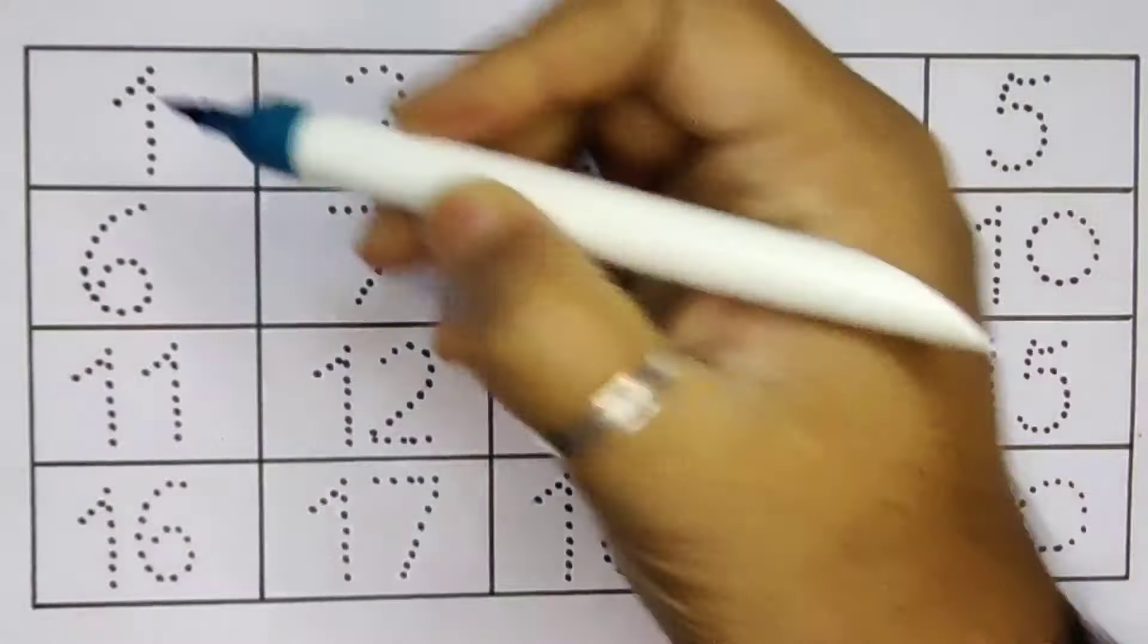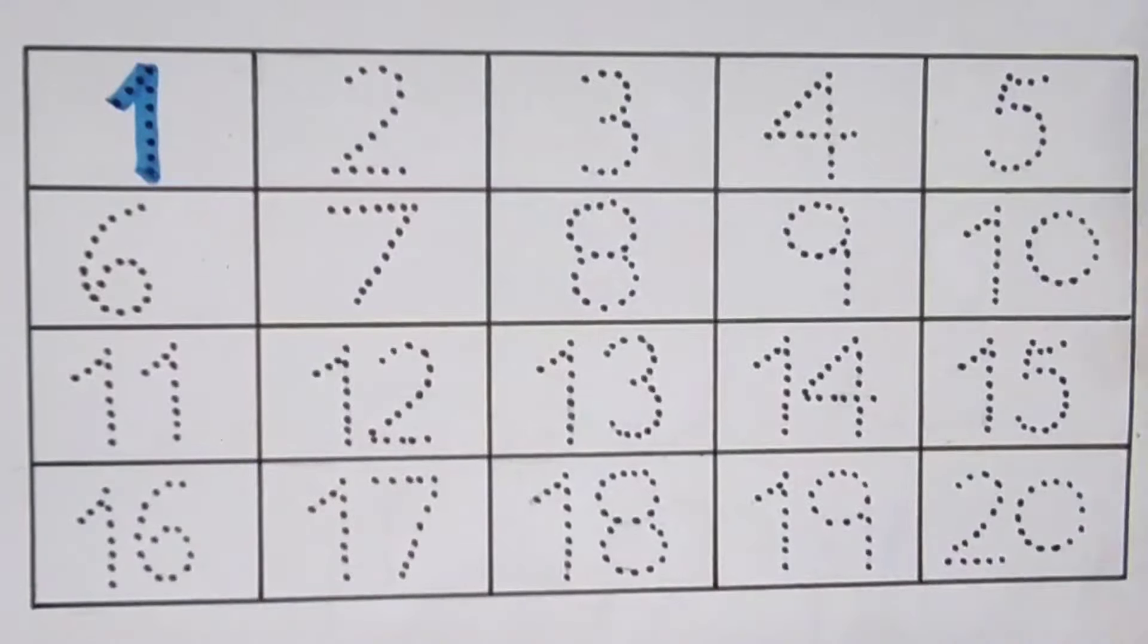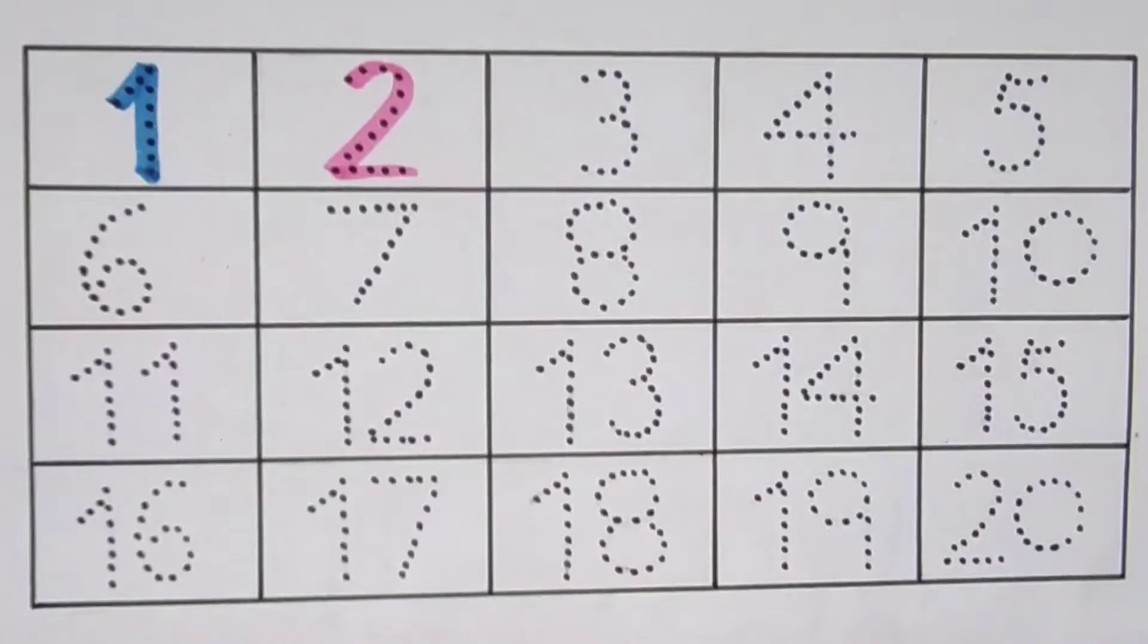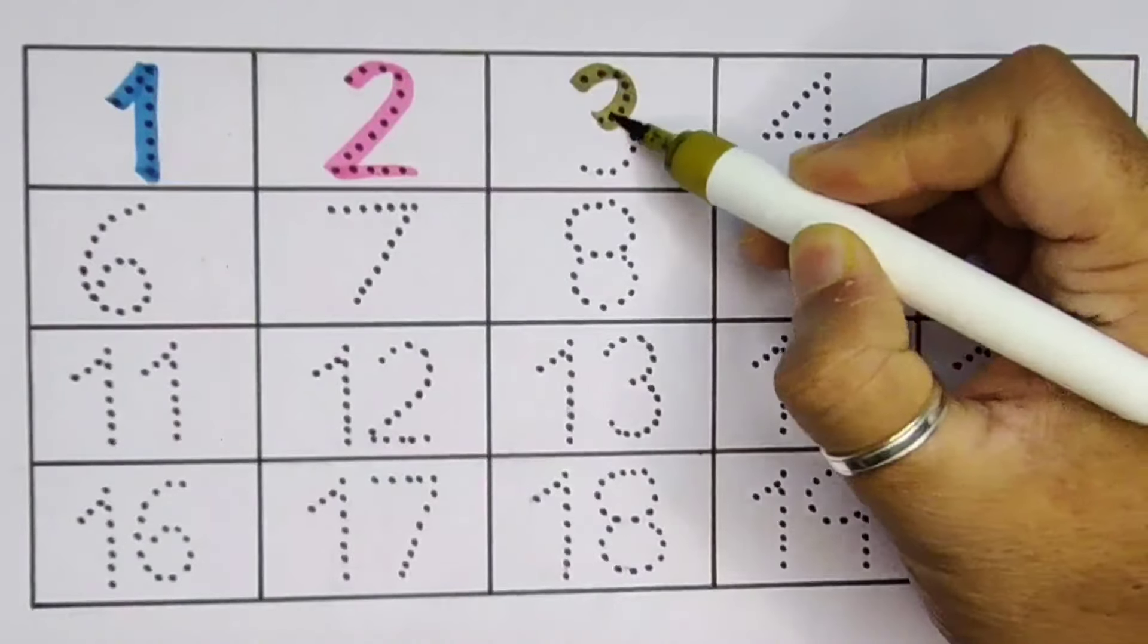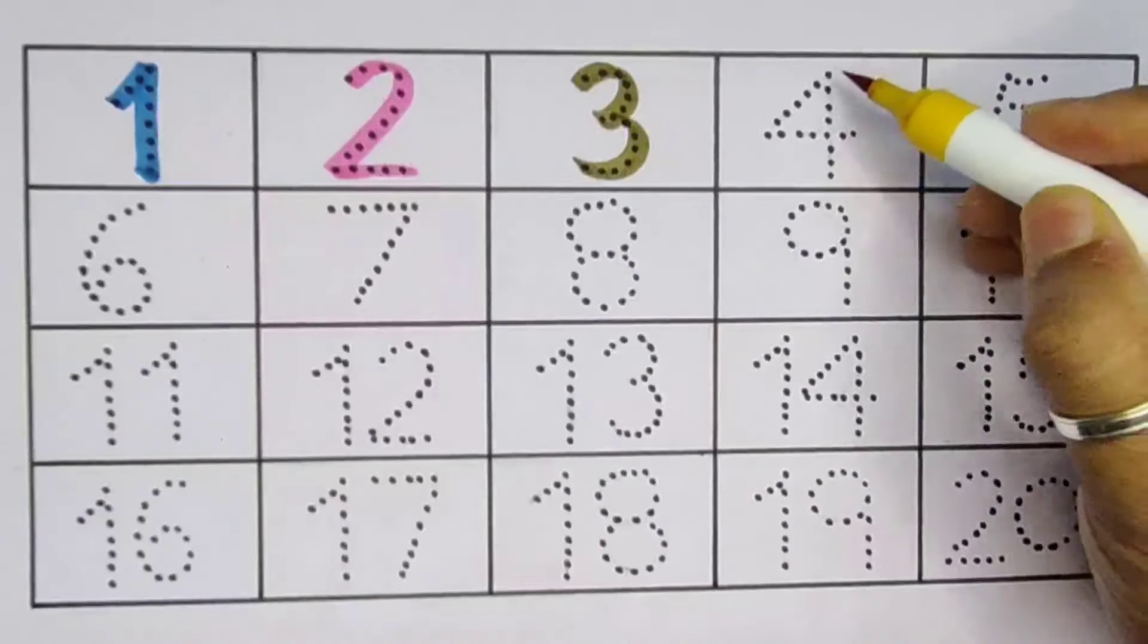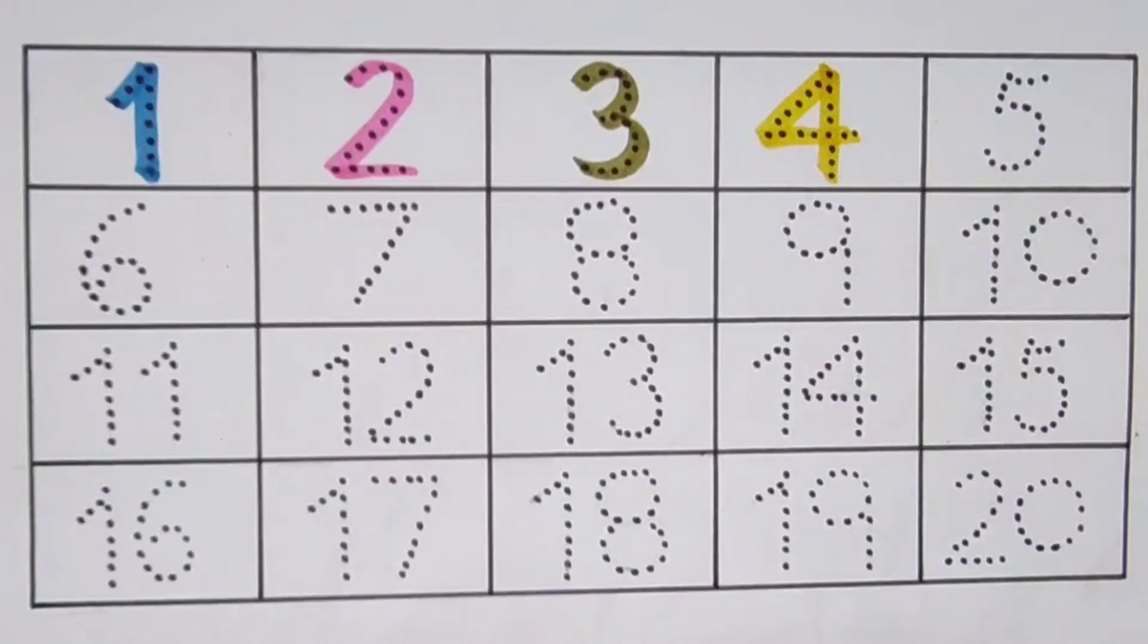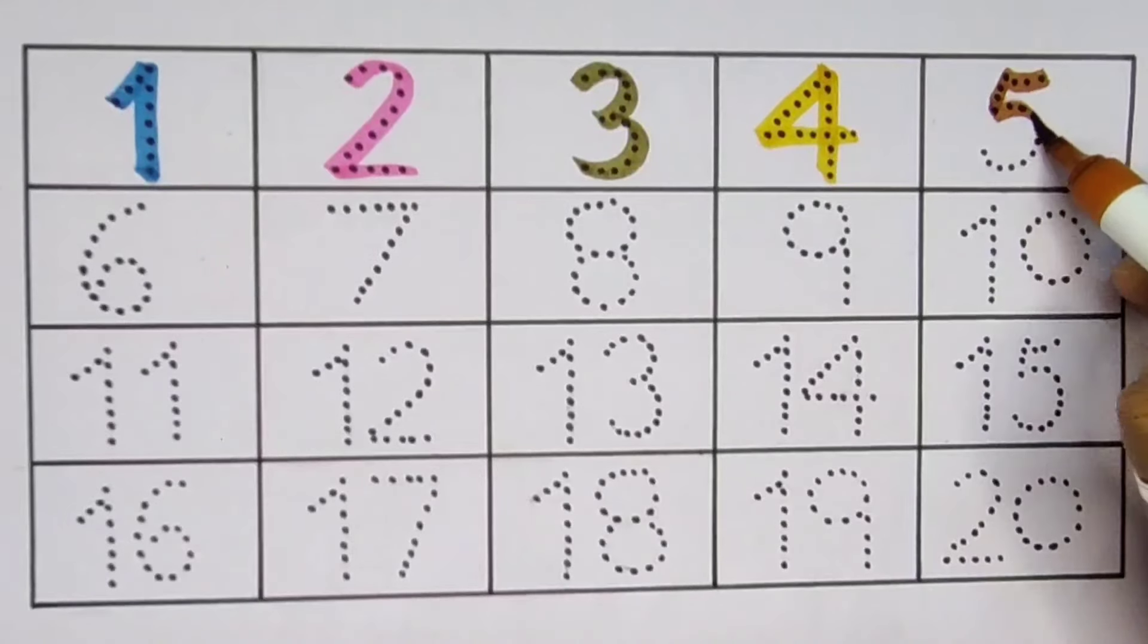First 1, number 1. Next 2, number 2. Next kids 3, number 3. Next 4, number 4. Next kids 5, number 5.